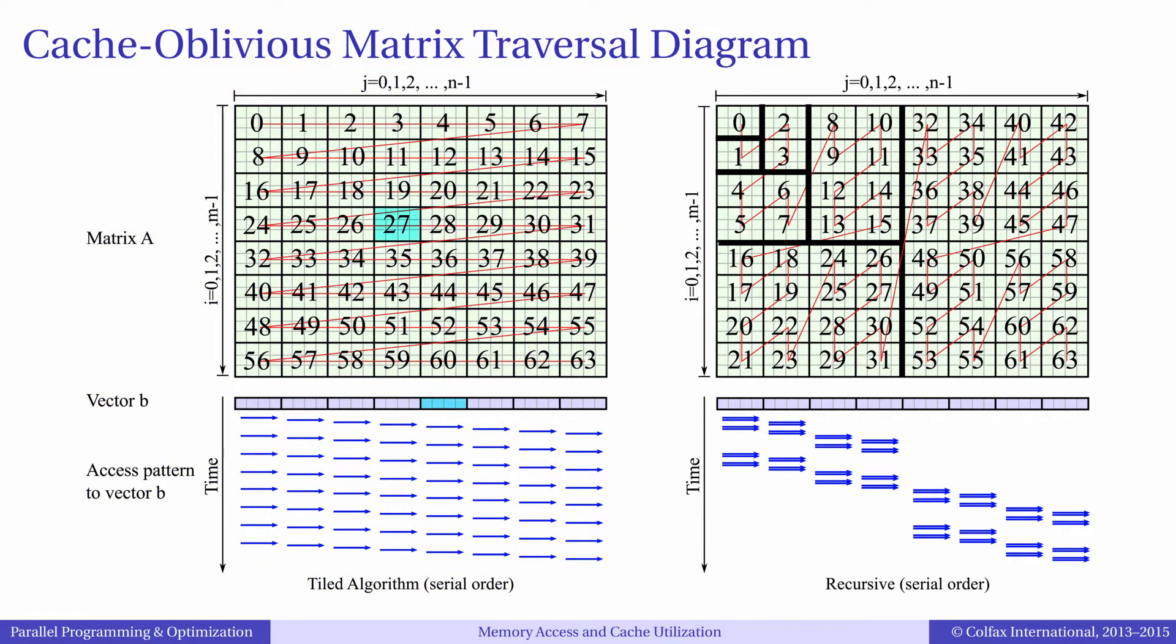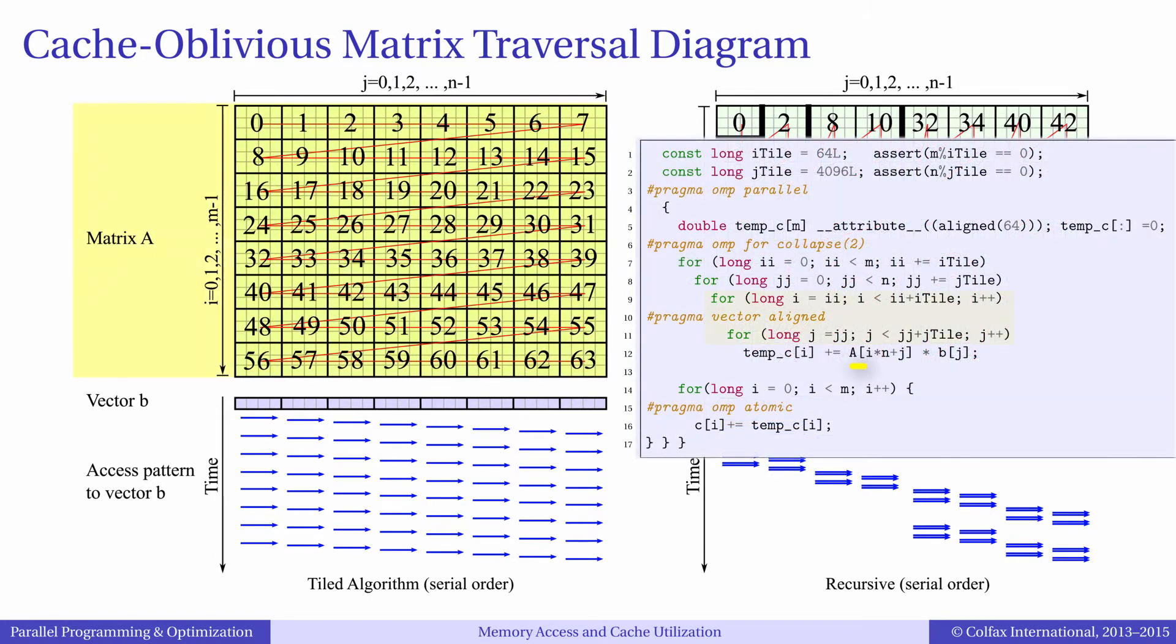The bigger rectangles represent tiles, and the smaller rectangles represent elements within the tiles. Matrix A we read tile by tile, moving tiles from left to right and from top to bottom. If you look at how we use vector B, you will see that we use a strip of vector B several times, then we move to another strip, use it several times, and so on.